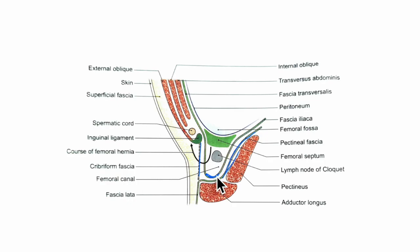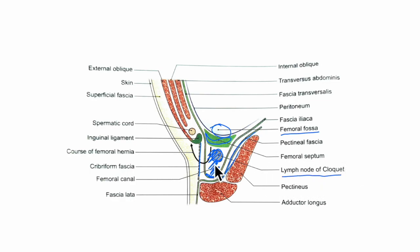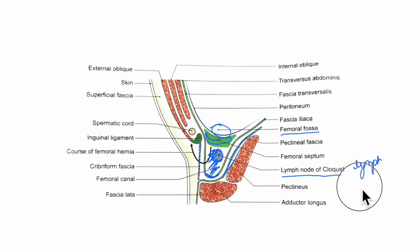The femoral ring is closed by a condensation of extraperitoneal connective tissue called the femoral septum. The parietal peritoneum covering the septum from above shows a depression called the femoral fossa. The femoral canal contains a lymph node called the lymph node of Cloquet or Rosenmüller, as well as lymphatics and a small amount of areolar tissue.